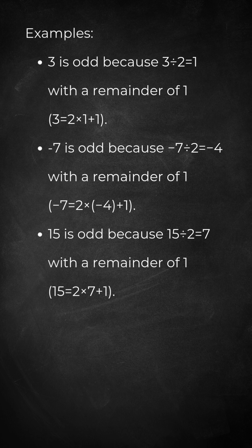15 is odd because 15 divided by 2 equals 7 with a remainder of 1. 15 equals 2 times 7 plus 1.